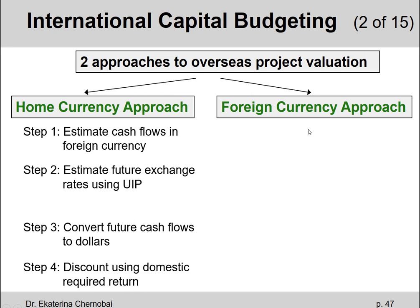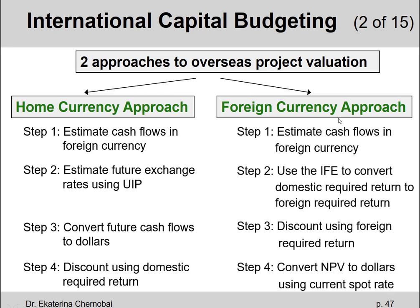The foreign currency approach has everything kind of backwards. We basically keep everything in the foreign currency until the very end. We estimate our cash flows in the foreign currency — that's the same step one across the two approaches. Then we discount them, essentially finding the NPV in the foreign currency rather than in dollars. We use the international Fisher effect to convert the domestic required return to a foreign required return, and then we do the discounting to find the NPV denominated in the foreign currency.